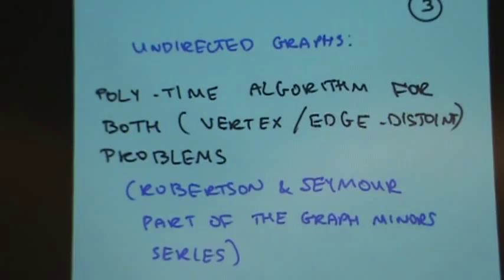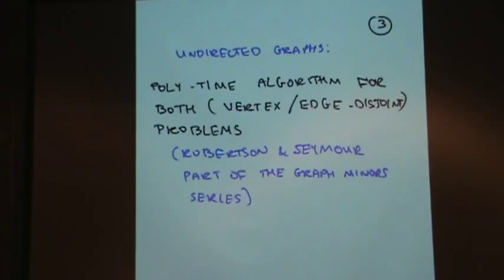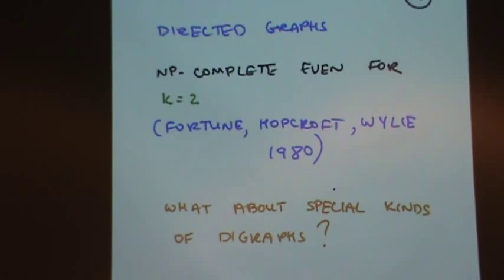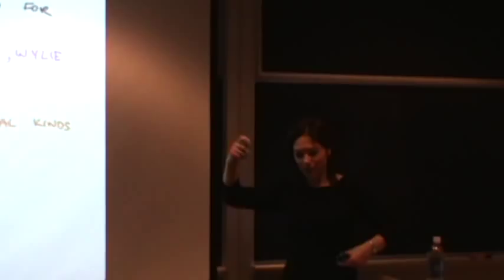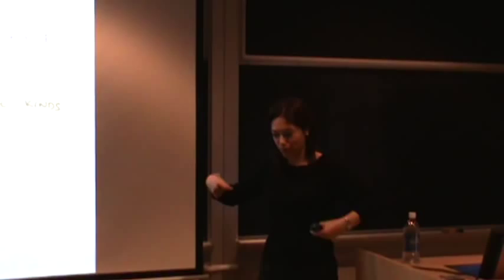What about the directed case? Here it's also done because it's NP-complete. It's a theorem of Fortune, Hopcroft, and Wyllie from 1980 that even for K equals two, the problem is NP-complete. If I give you a general directed graph and two pairs of terminals, it's NP-complete to test whether I can connect them. So since my talk is 48 minutes long and not three minutes long, we ask what about special kinds of digraphs? Maybe there are some special classes of digraphs where it's still interesting and yet I can say something.